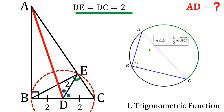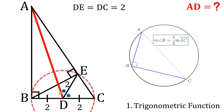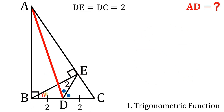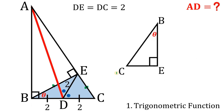If we have a triangle whose hypotenuse is the diameter of the circle, then the triangle formed is a right triangle. Now, let's call angle BEC equal to theta. Using right triangle BEC, we can rewrite CE and BE in terms of sine and cosine. BC is 4 units, so using trigonometric functions: sine theta equals the opposite side over the hypotenuse, and cosine theta equals the adjacent side over the hypotenuse.